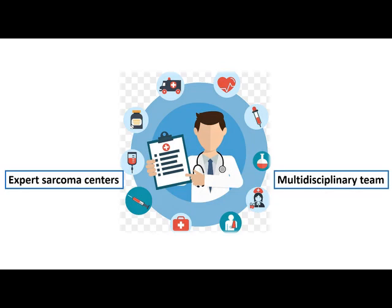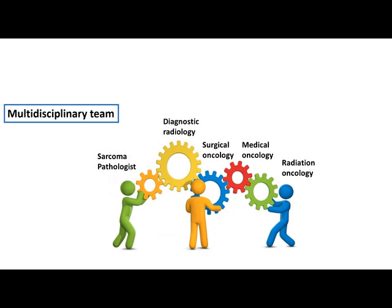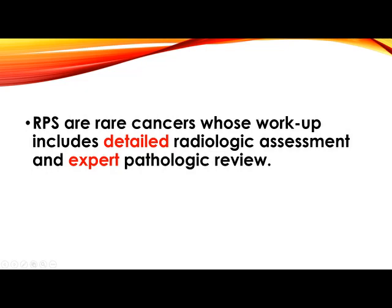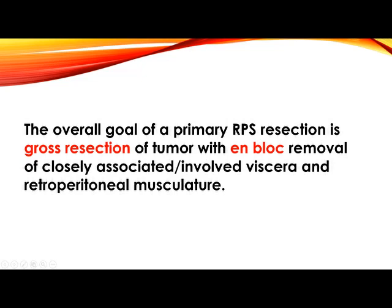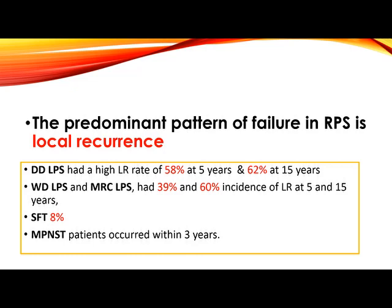The third lesson: sarcoma is a very complex cancer. It needs to be treated at an expert sarcoma center in a multidisciplinary manner. It is a rare cancer requiring detailed radiological assessment and expert pathological review to differentiate subtypes and treatment approaches. The overall goal of resection is gross resection with en-bloc removal of closely associated and involved viscera and mid-retroperitoneal vasculature — mostly complex surgery with multivisceral resection. The predominant pattern of failure is local recurrence; dedifferentiated liposarcoma has a high local recurrence rate of about 60%. Fortunately, our patient is now more than four years without evidence of recurrence.